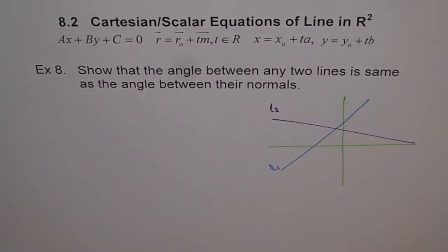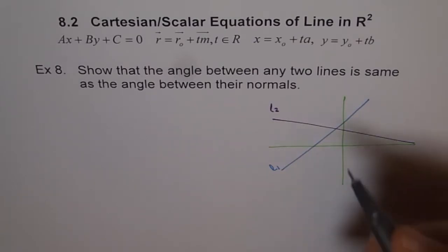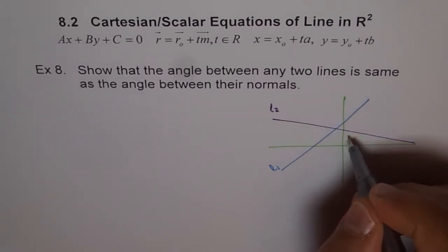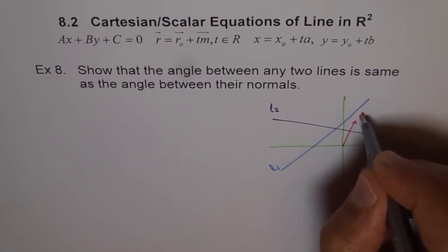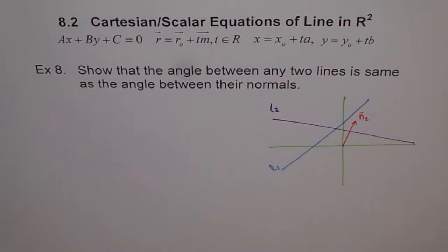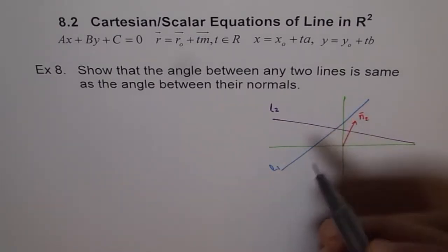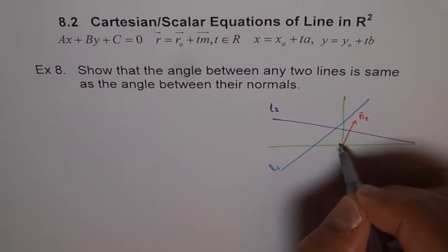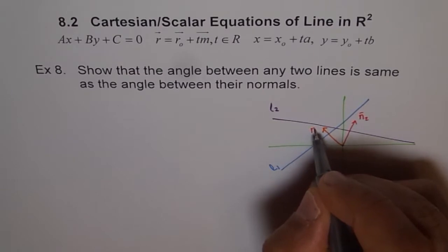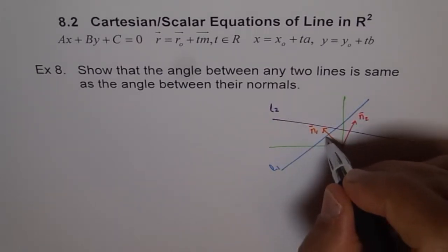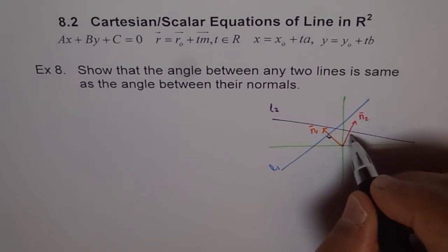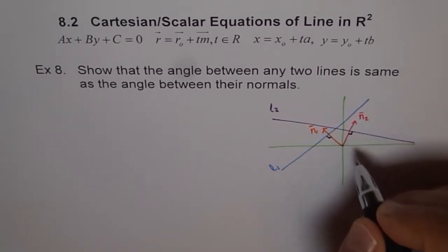Now let's draw normals to these lines. The normal to line 2 — let's assume this to be normal 2. And let me draw the normal to the next line — let's say normal 1. So N1 is normal to line number 1, giving us a 90-degree angle. N2 is normal to line number 2, giving us a 90-degree angle here.